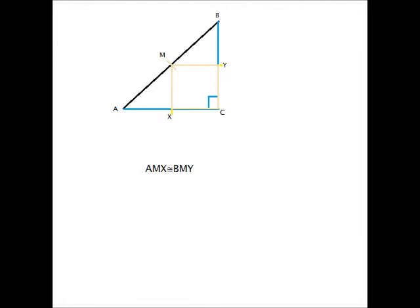Triangles AMX and BMY are congruent due to the fact that the central portion of the triangle we've drawn between the x-axis, y-axis, and our line segment is a square.